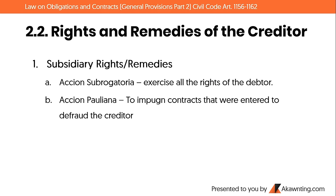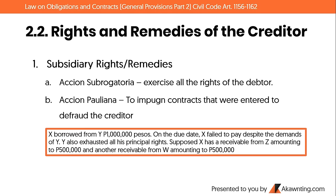Number 2: subsidiary rights or remedies of the creditor. Subsidiary remedies cannot be exercised unless all principal rights have already been exhausted. Example: X borrowed one million pesos from Y. On the due date, X failed to pay despite Y's demands. Y has also exhausted all his principal rights. Suppose X has a receivable from Z amounting to 500,000 pesos, and another receivable from W amounting to 500,000 pesos.